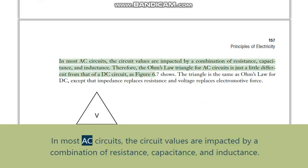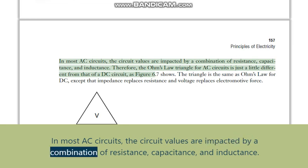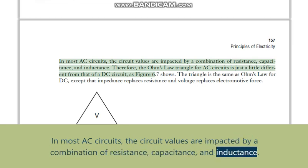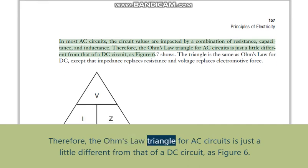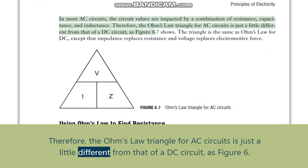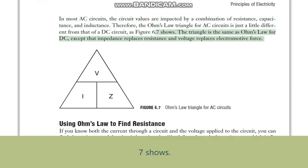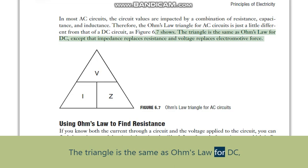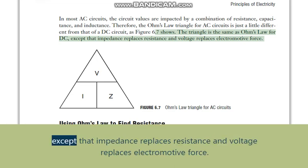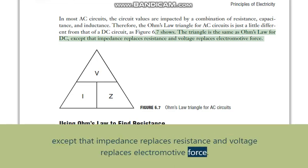In most AC circuits, the circuit values are impacted by a combination of resistance, capacitance, and inductance. Therefore, the Ohm's law triangle for AC circuits is just a little different from that of a DC circuit. The triangle is the same as Ohm's law for DC, except that impedance replaces resistance and voltage replaces electromotive force.